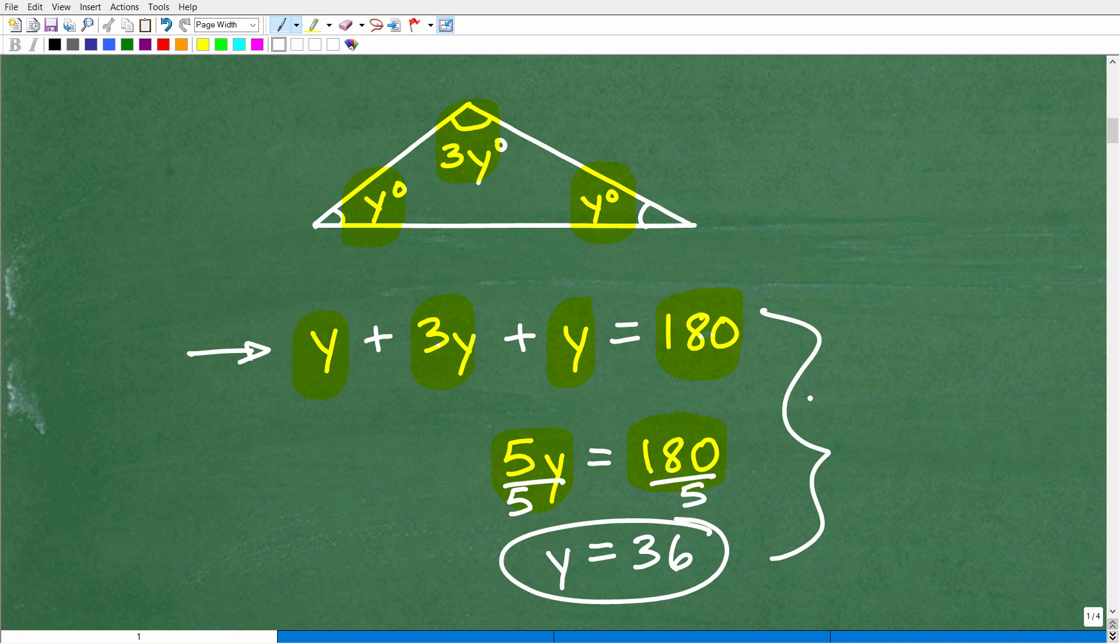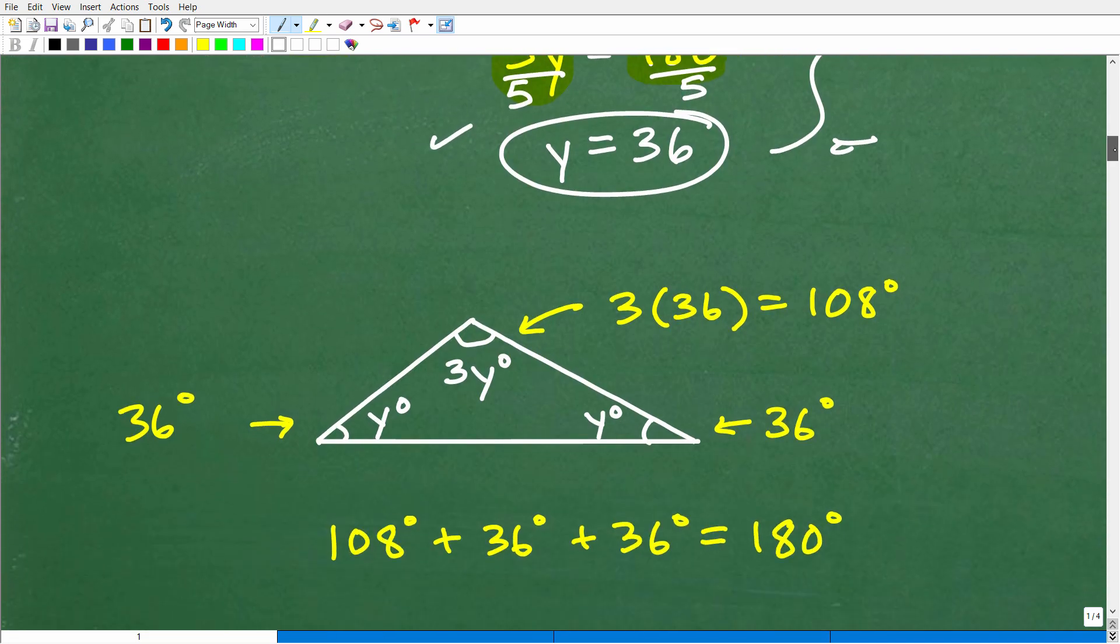If this is confusing, then you need to go back and review how to solve basic algebra equations. Remember, when you are studying geometry to any level, you're going to need to know some basic algebra, a pretty decent amount of algebra. So if you're struggling with algebra, you're not going to be able to do these problems. Okay, so y is equal to 36. But we're not done. A lot of students would be so excited and then just say they stop. And then they go, here's the answer. Well, no, not exactly.